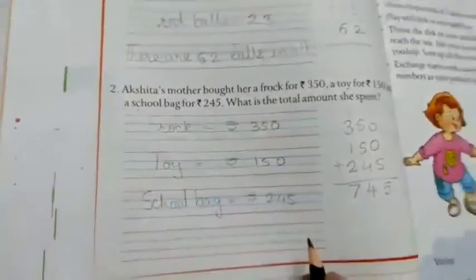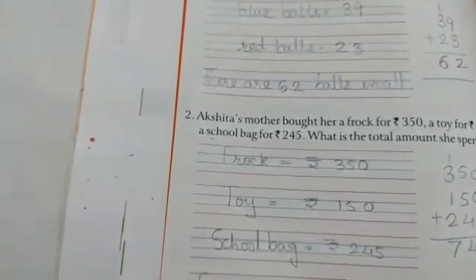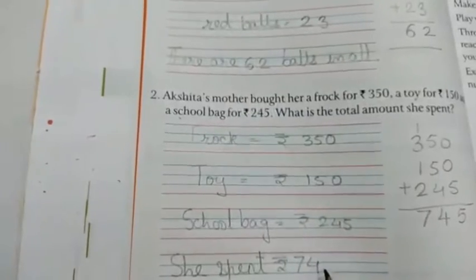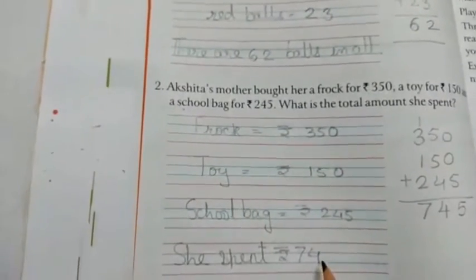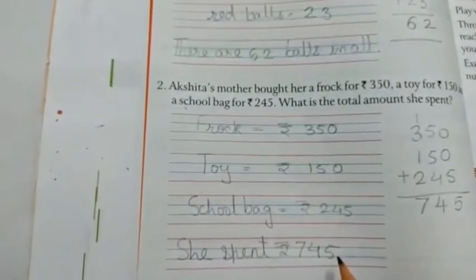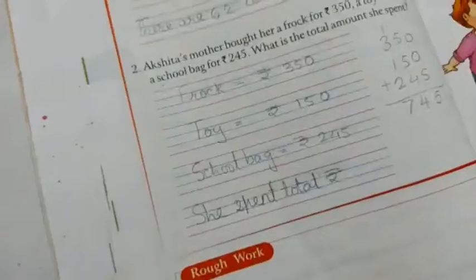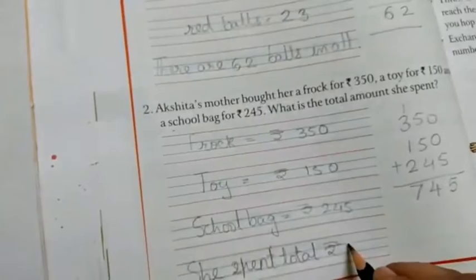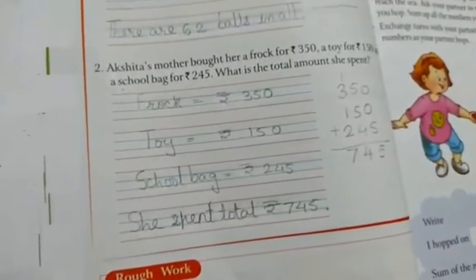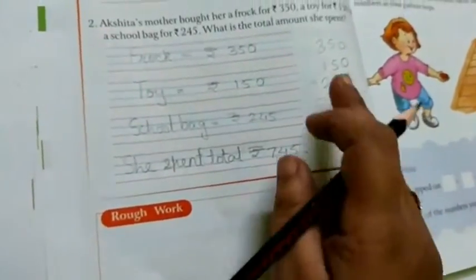She spent rupees 745. So like this way you can pause and complete this. You can use the rough column also for adding.